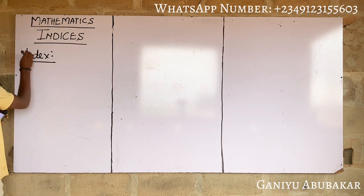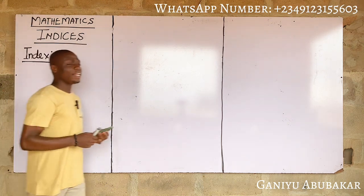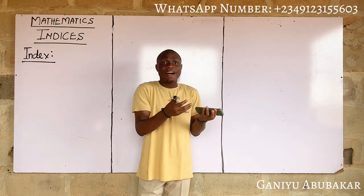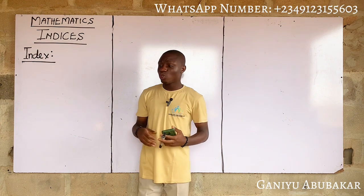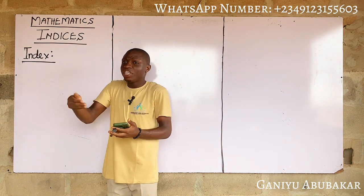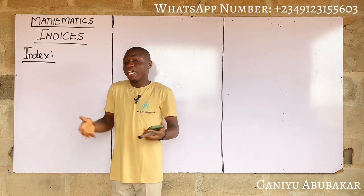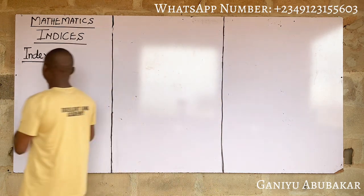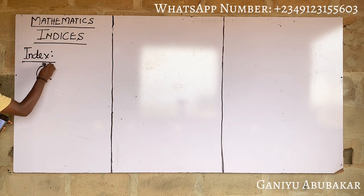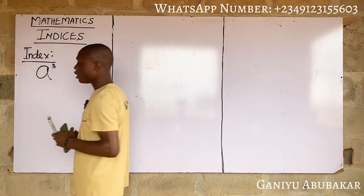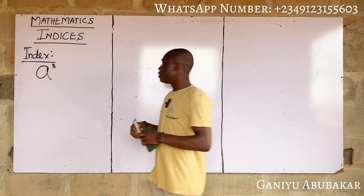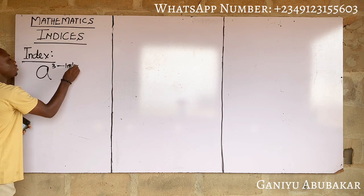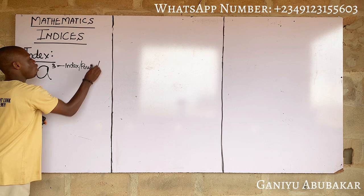So what is an index? By definition, an index is simply the power or degree to which a variable, value, or term is being raised. For instance, if we have a to the power three, this three is called the index, or you can call it the power or the degree.